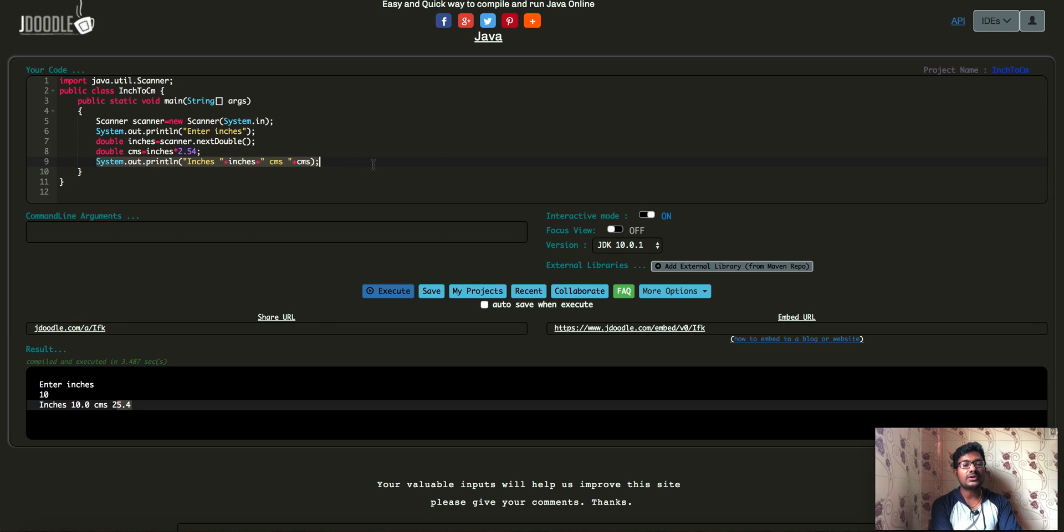And then finally we have printed those information on the terminal using system dot out dot println inches. This inches would be given by the user, centimeters that was converted by us using this arithmetic operation.